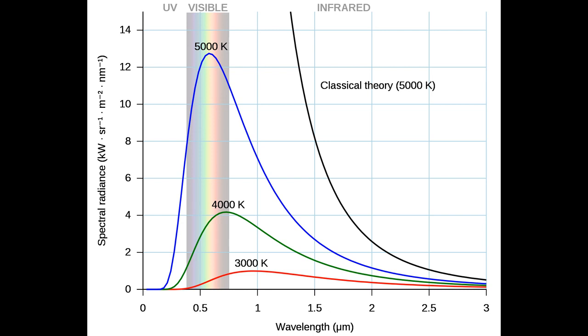A black body or blackbody is an idealized physical body that absorbs all incident electromagnetic radiation, regardless of frequency or angle of incidence. The name black body is given because it absorbs radiation in all frequencies, not because it only absorbs.